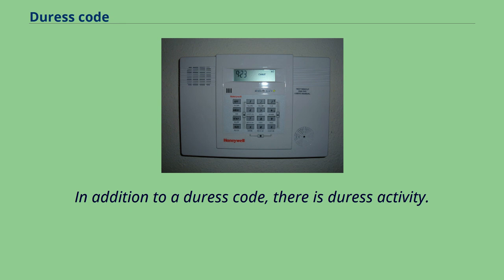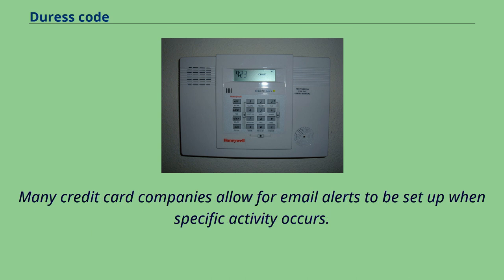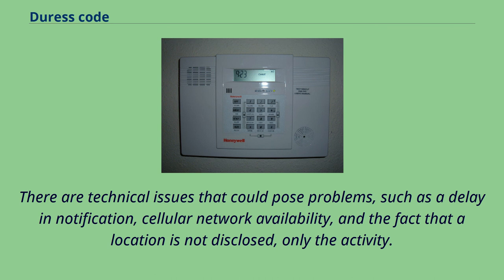In addition to a duress code, there is duress activity. This may include the duressed individual withdrawing cash from an ATM using a specific credit card instead of using their debit card. Many credit card companies allow for email alerts to be set up when specific activity occurs. There are technical issues that could pose problems, such as a delay in notification, cellular network availability, and the fact that a location is not disclosed, only the activity.